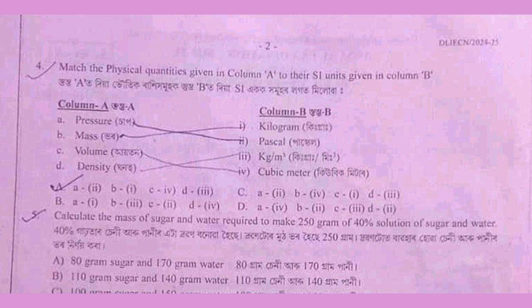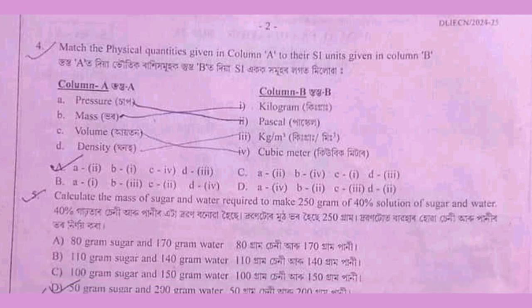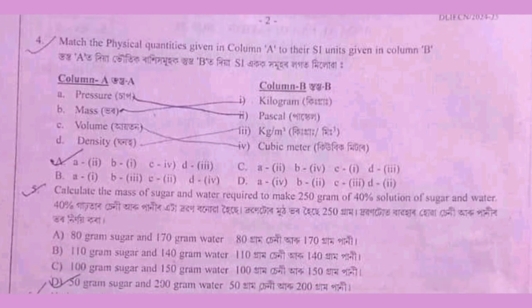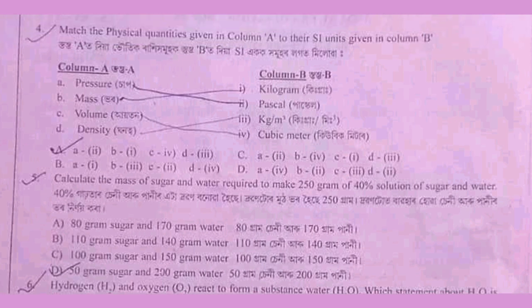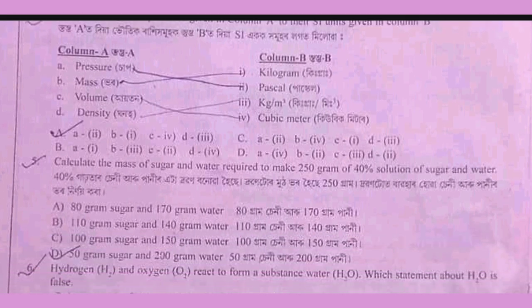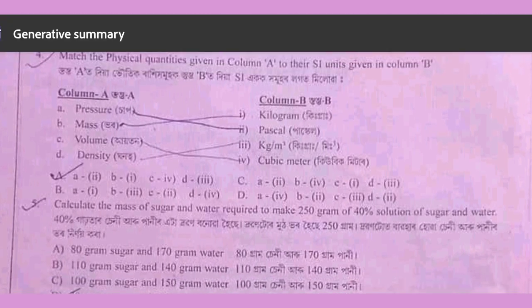Pressure is Pascal, 4 is kilogram, volume is cubic meter, and density is kilogram per meter cube. So A2 is 2, B2 is 1, C2 is 4, and D2 is 3.